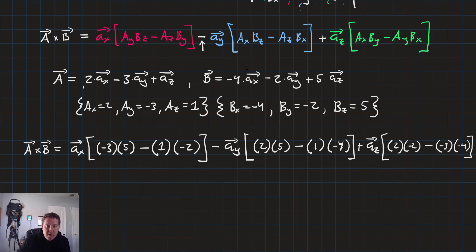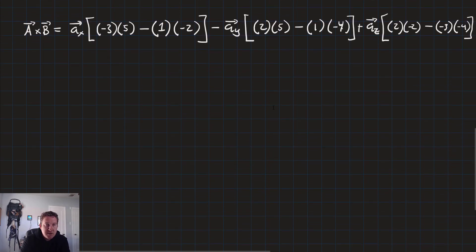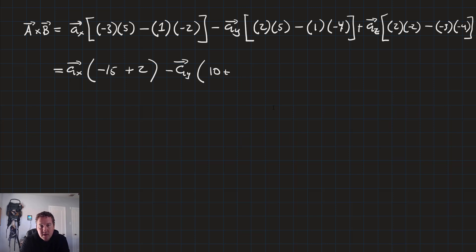And from there, it's just algebra to find our result. So we'll have a sub x times negative 15 plus 2 minus a sub y times 10 plus 4 plus a sub z times negative 4 minus 12.